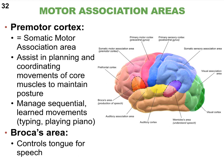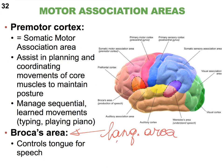Broca's area is one of two language areas that you really need to know. It is typically seen only in the left hemisphere. Broca's area is a motor association area involved with controlling motor output — skeletal muscles in particular that control your tongue so you can have good speech. My Broca's area is very active right now as I twist and turn my tongue to form words.